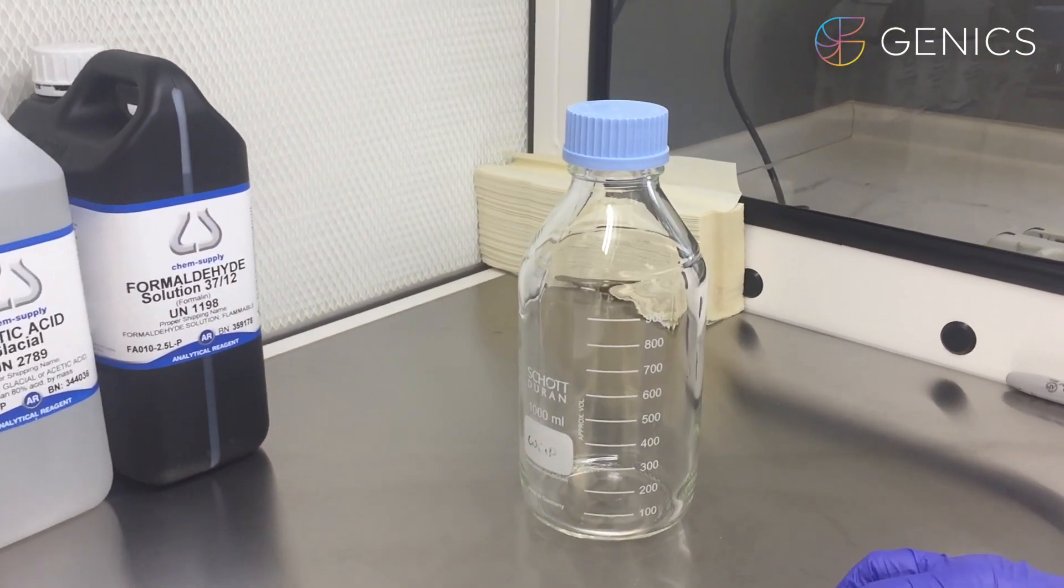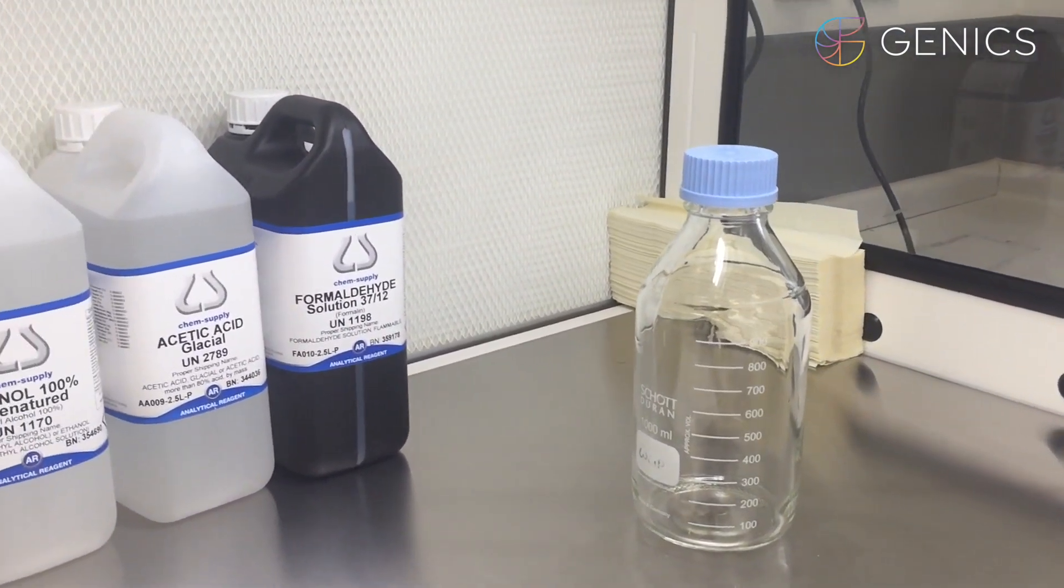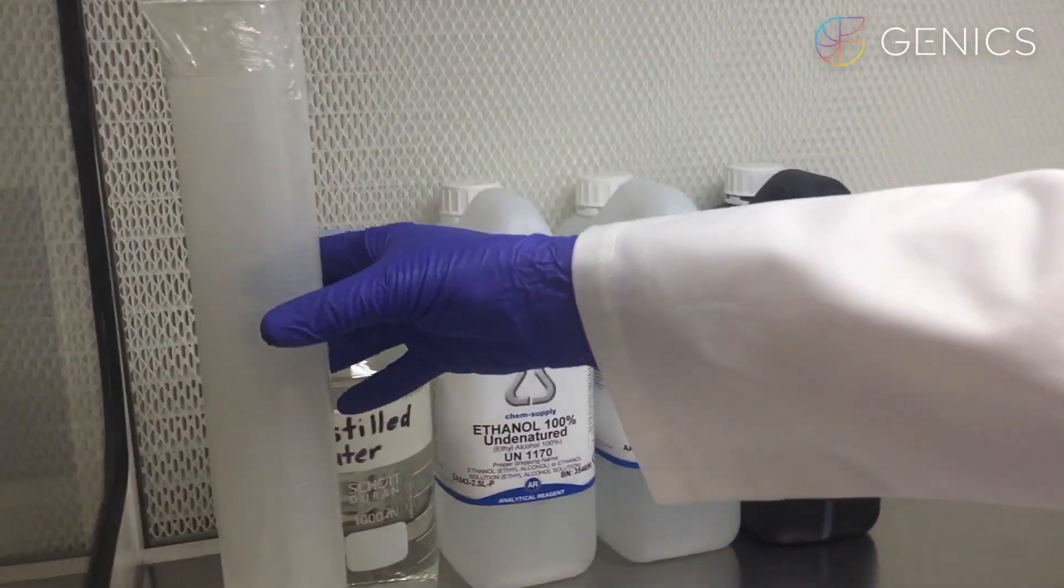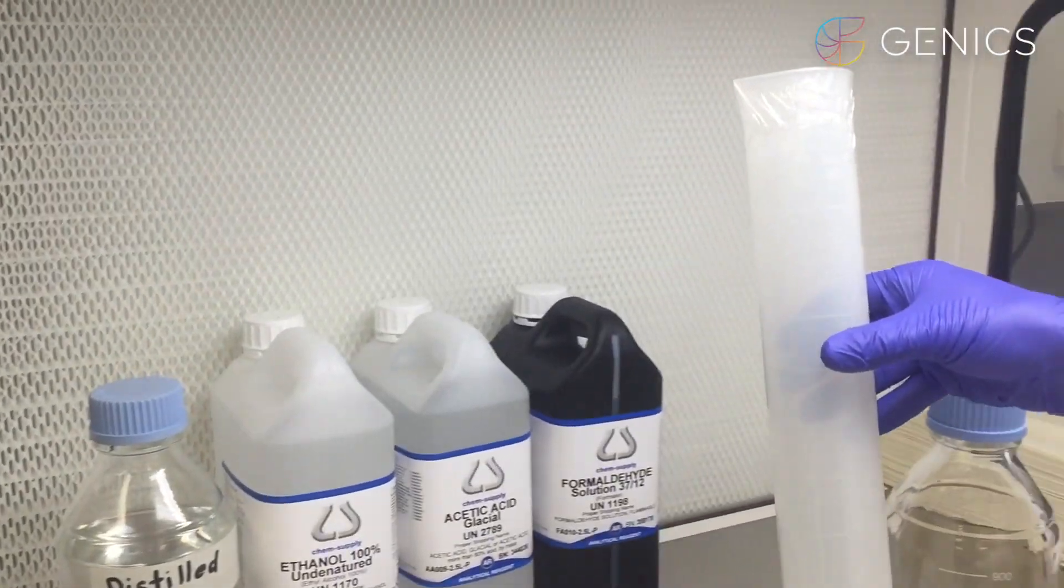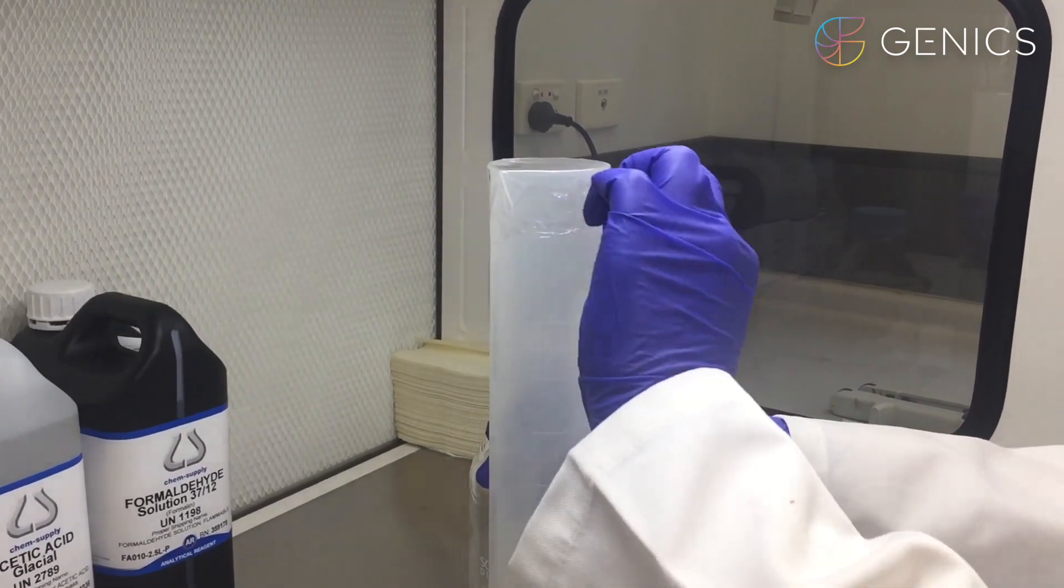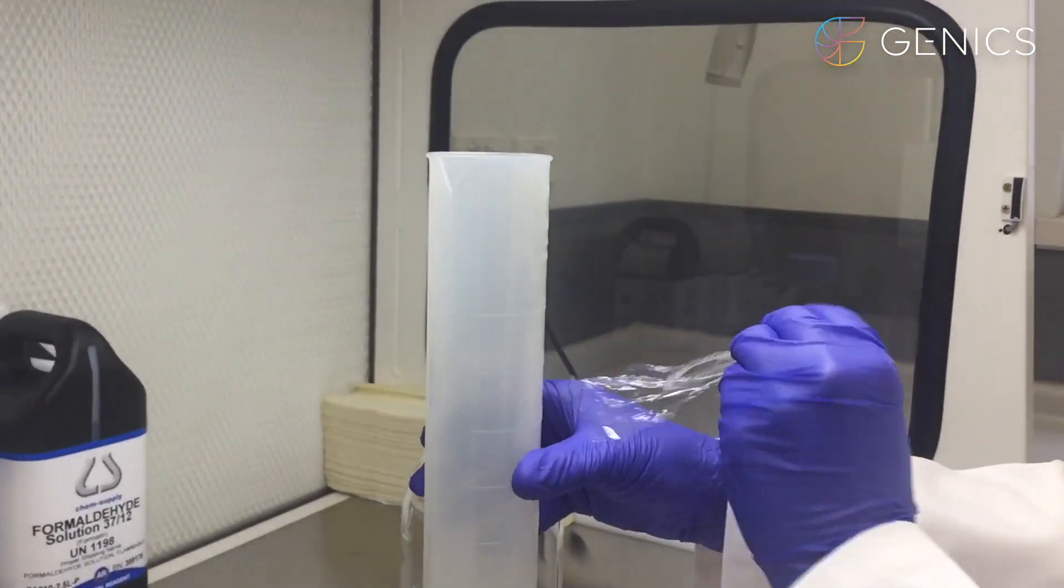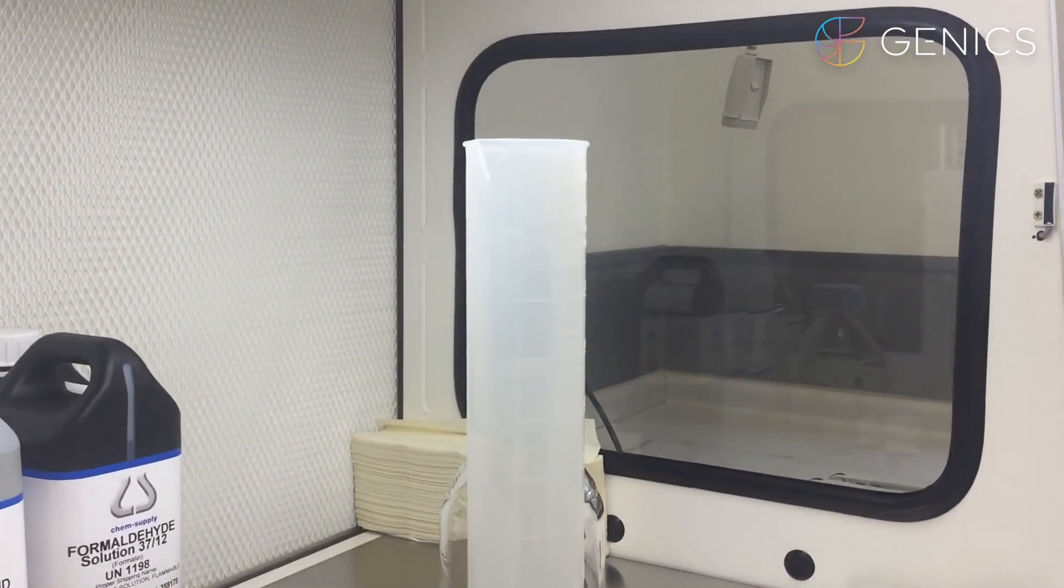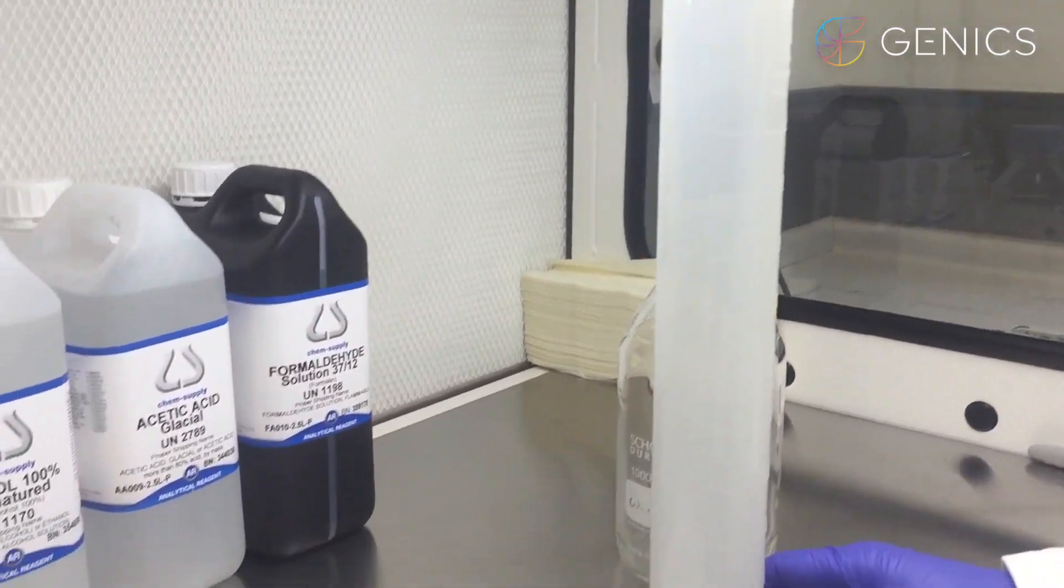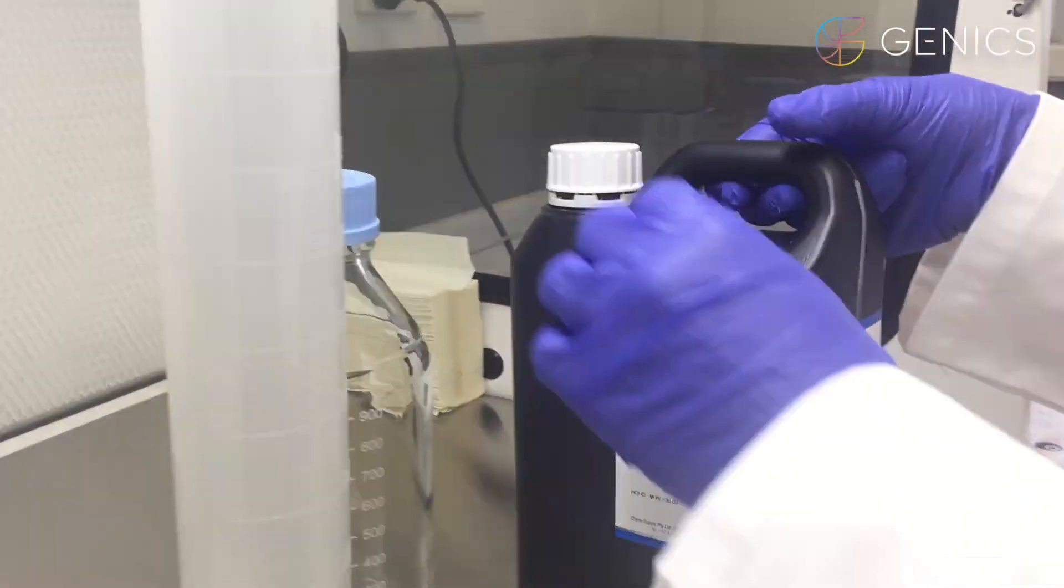So our first ingredient is 220 mils or milliliters of formalin. I have a measuring cylinder here to measure out the different chemicals. 220 mils of formaldehyde or formalin solution.